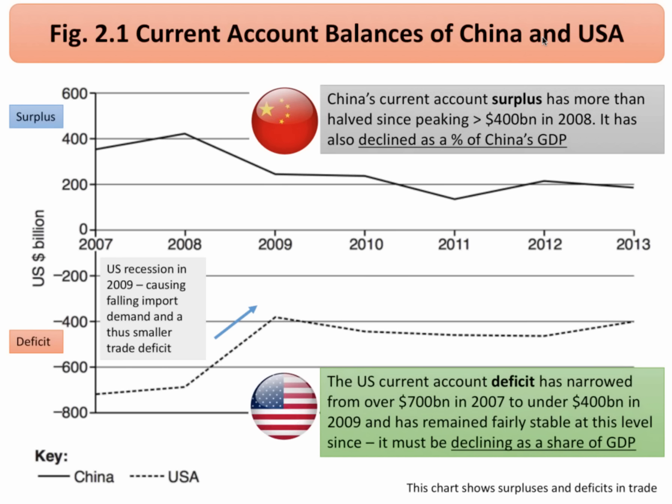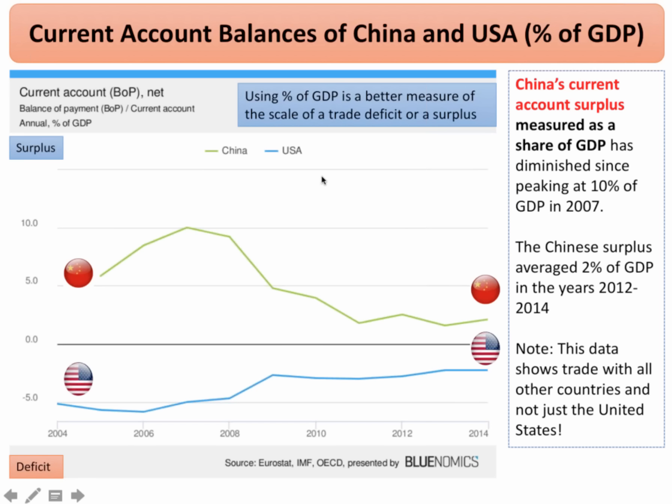What this is essentially saying is that there's a big trade imbalance between these two giant economies. China has a structural trade surplus; the United States has a structural trade deficit. One way of measuring it is as shown in figure 2.1, in billions of dollars. But there's another way of showing the trade balance — measuring it as a share of the nation's economy, as a percentage of GDP.